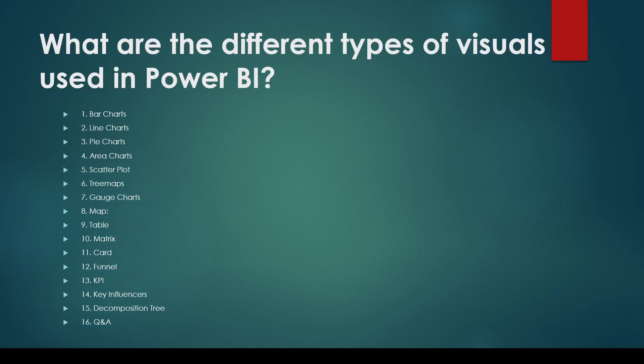The next question you could be asked is: what are the different kinds of visuals in Power BI? Power BI is a really powerful tool and it provides most of the visuals you need. Some common visual names include bar chart, line chart, pie chart, area chart, scatter plot, tree map, gauge chart, map, table, matrix, card, funnel, KPI, key influencer, decomposition tree, and Q&A visual.